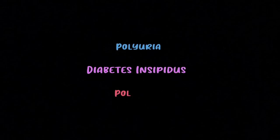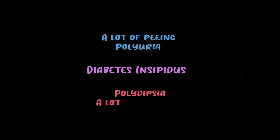In diabetes insipidus you're urinating a ton but there's no glucose — hence tasteless. Lithium causes diabetes insipidus, which is where the polyuria and polydipsia come from. Polyuria is just a lot of urination, and polydipsia is excessive thirst. They're intimately related: you're peeing a ton, so you need to drink more to make up for it.